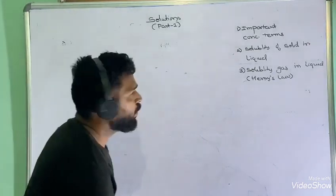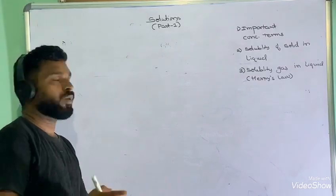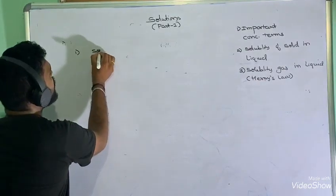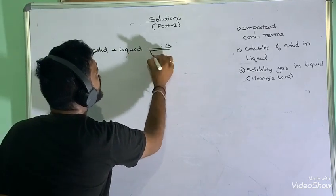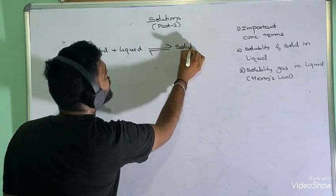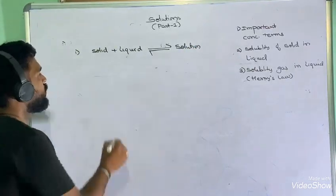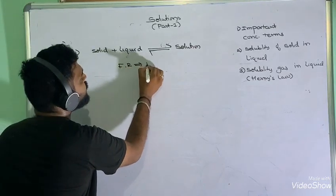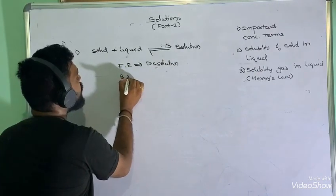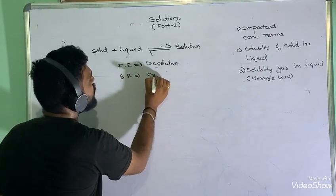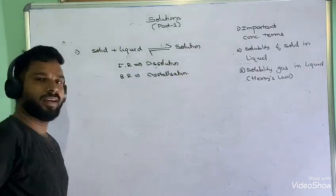Next, we discuss solubility of solid in liquid. When a solid is added to a liquid, a solution is formed. The forward reaction — solid dissolving — is called dissolution. The backward reaction — solution converting back to solid — is called crystallization.